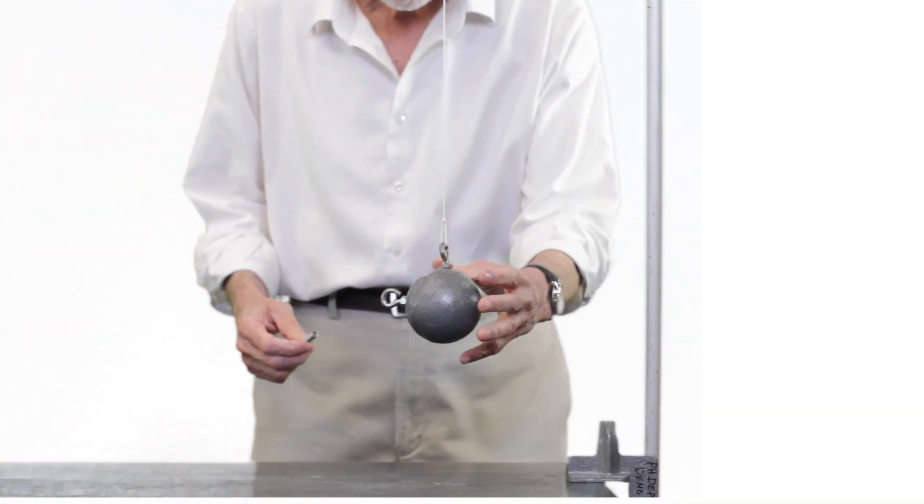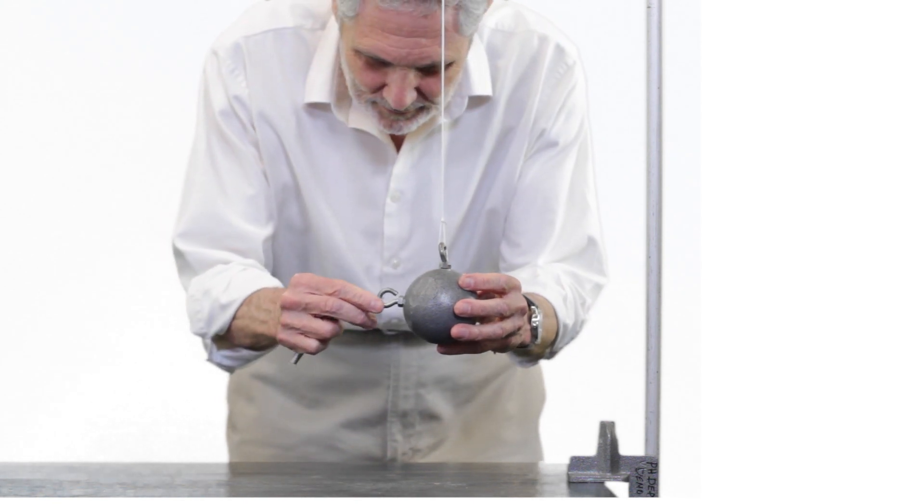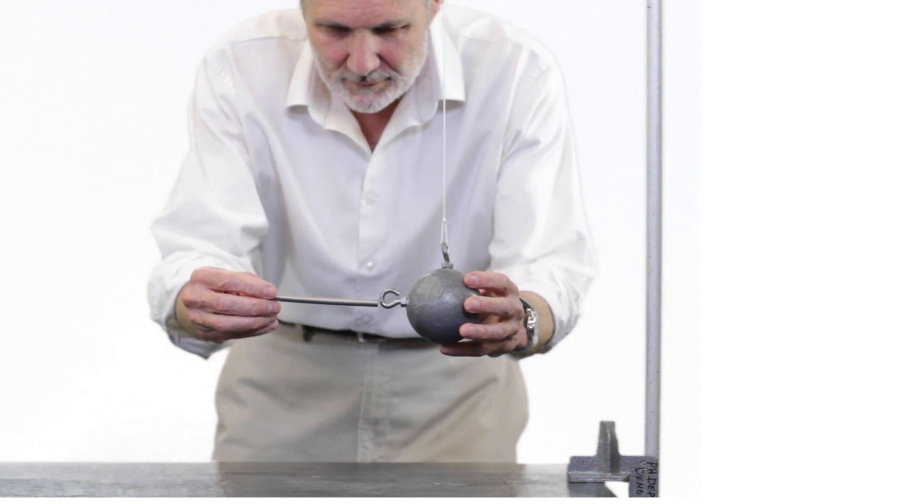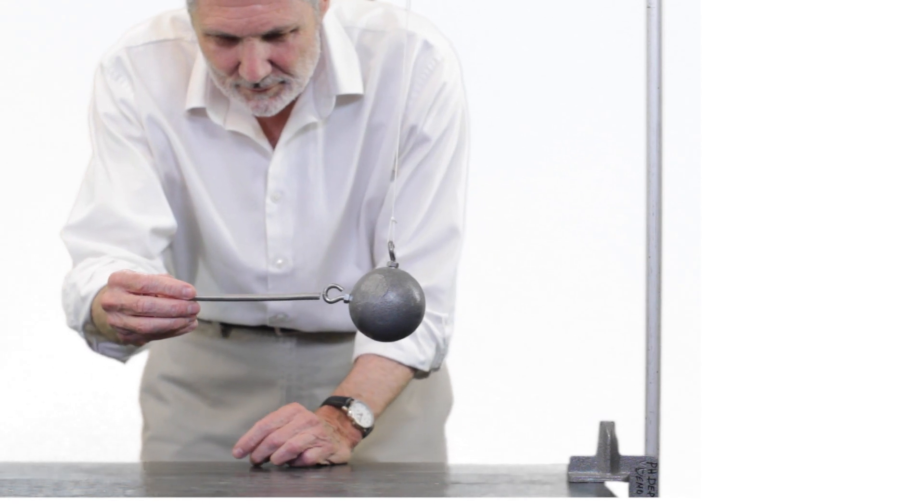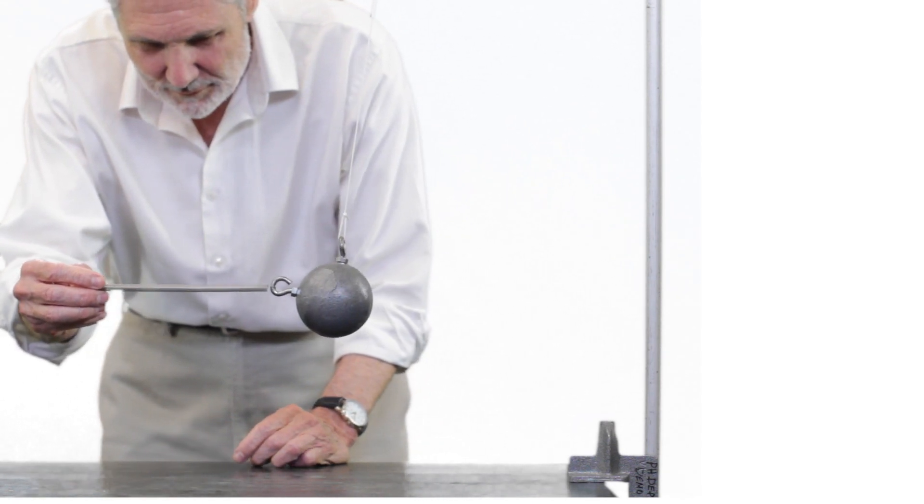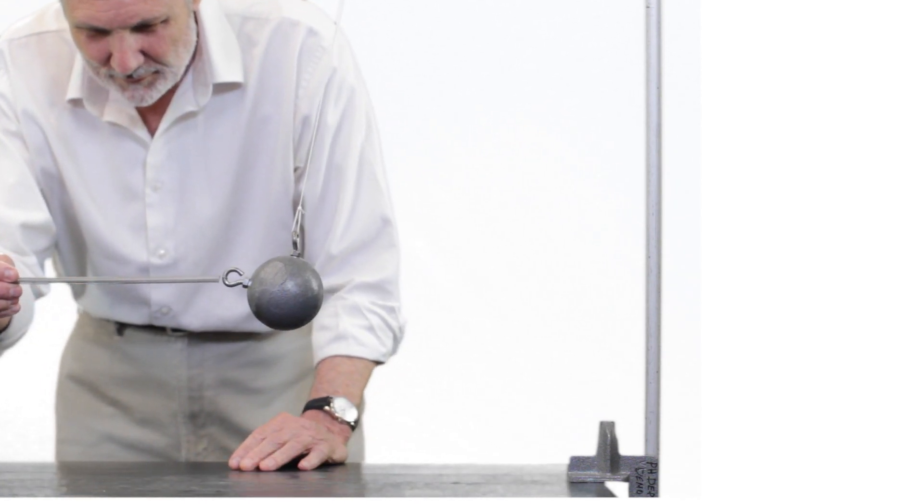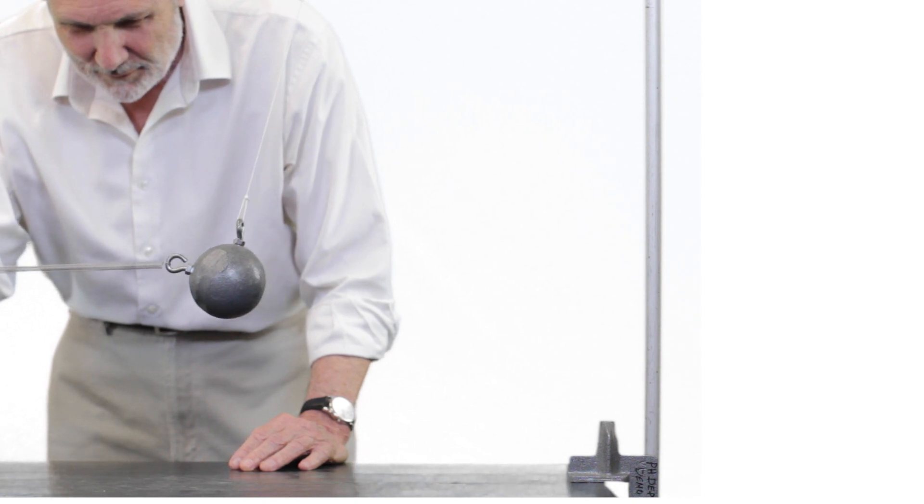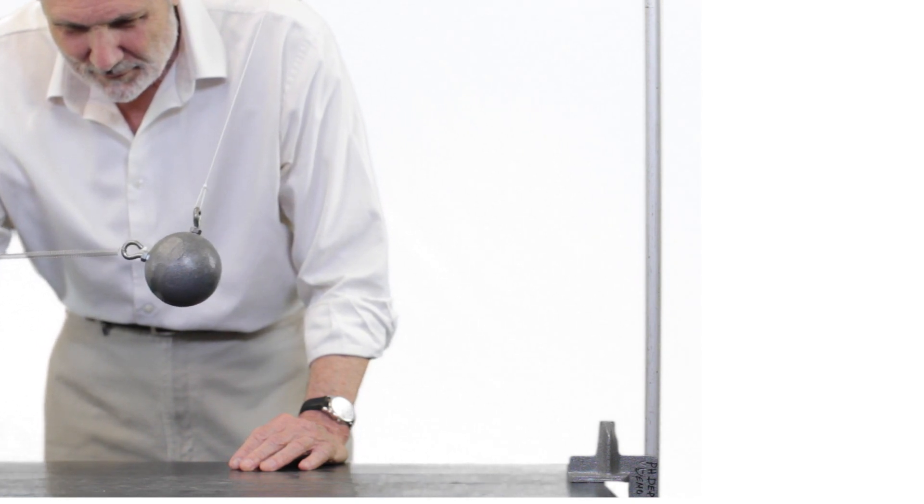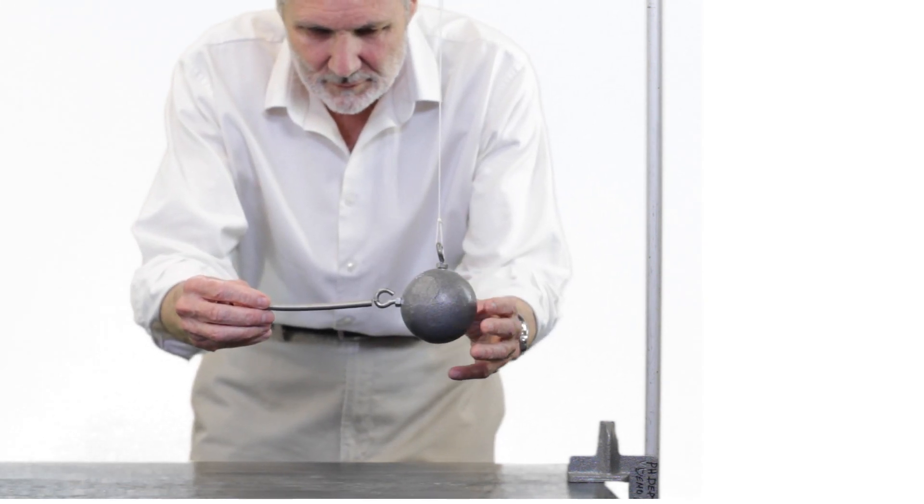Here we have a mass that is suspended from a string. This system is called a pendulum. I am now using a spring to slowly exert a horizontal force on the mass. Note that the spring stretches more and more. This tells us that more and more force is being required. The force is variable here, unlike before.